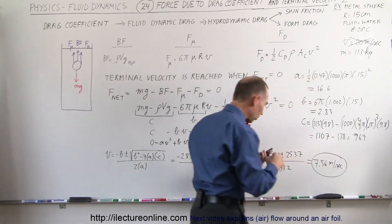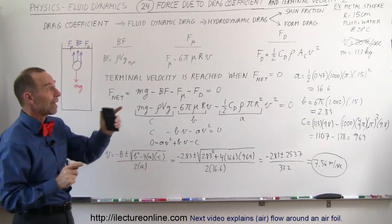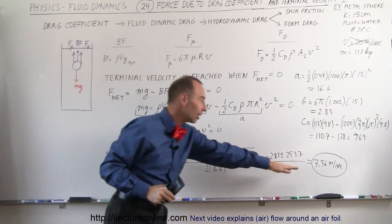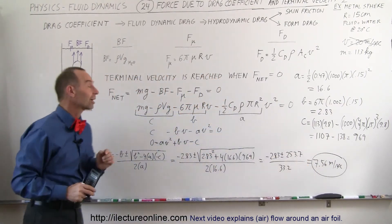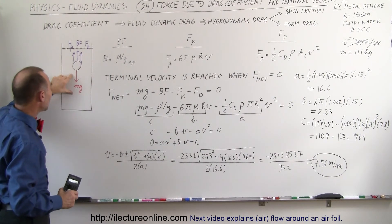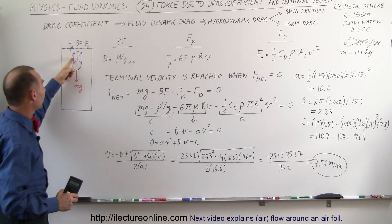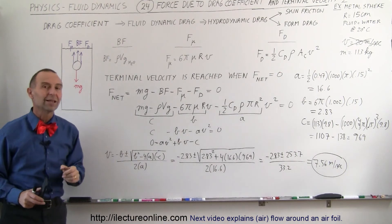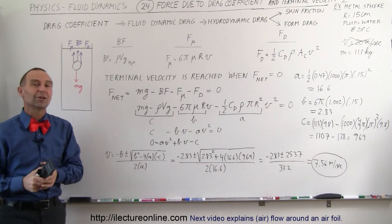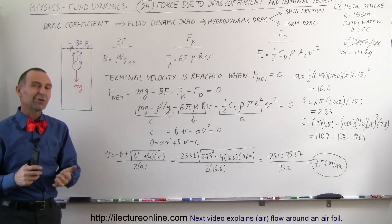So for a large metal sphere with a radius of 15 centimeters and a mass of 113 kilograms moving through water, the terminal velocity is 7.56 meters per second. At this speed, the weight is balanced by the three retarding forces: the buoyancy force, the viscosity force, and the drag force. That is how we find terminal velocity under real circumstances.